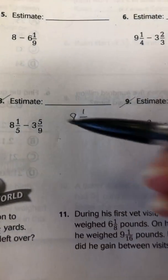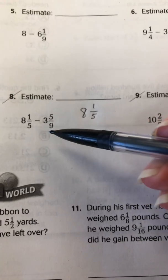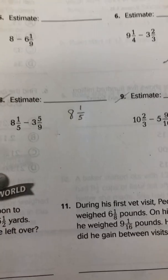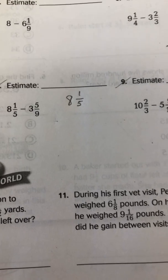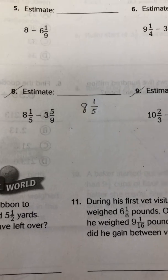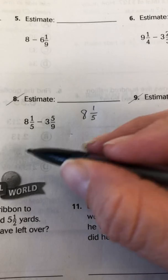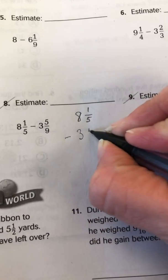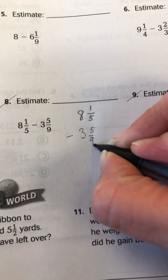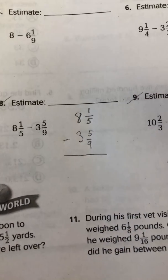So we're going to start with number 8 here. So we have 8 and 1/5 minus 3 and 5/9. What I like to tell the students to do is to rewrite the problem so that the numbers are stacked on top of each other for subtraction. So we have 8 and 1/5 and we want to subtract 3 and 5/9.